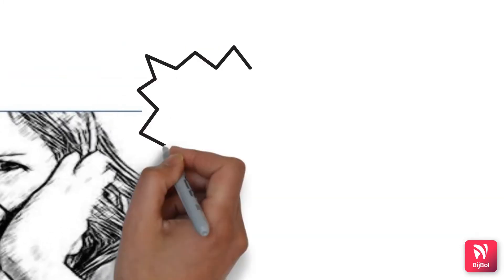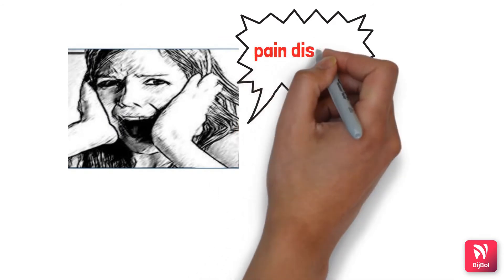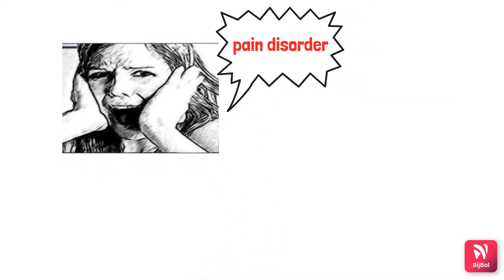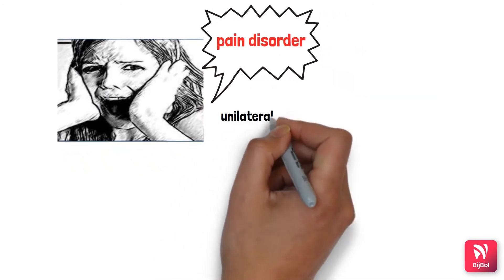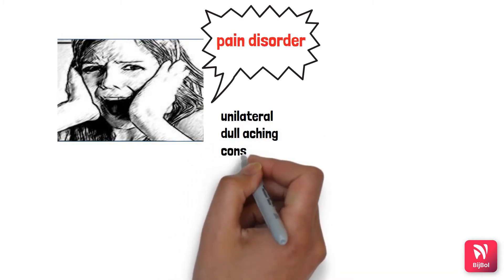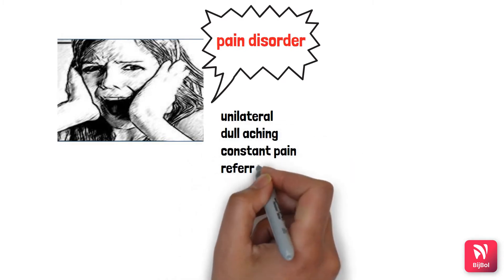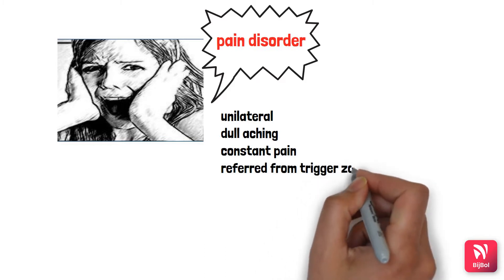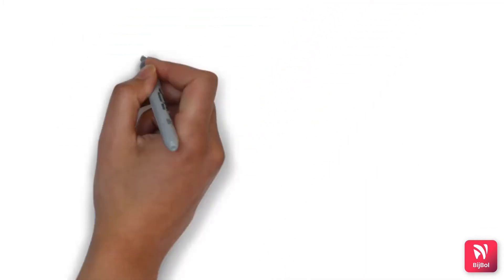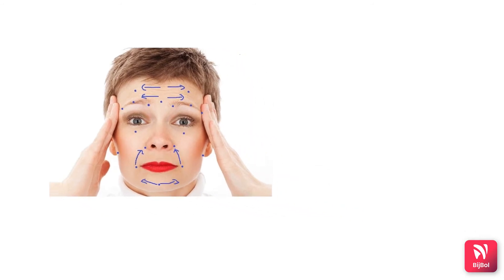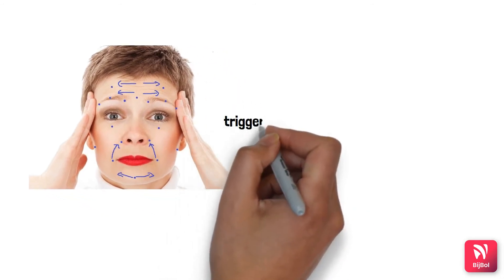What does MPDS mean? MPDS is a pain disorder. The specific thing about MPDS is it's usually unilateral pain, which is dull, aching, constant pain that's referred from something called a trigger zone. Trigger zones are areas or spots